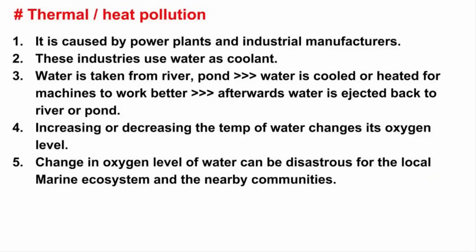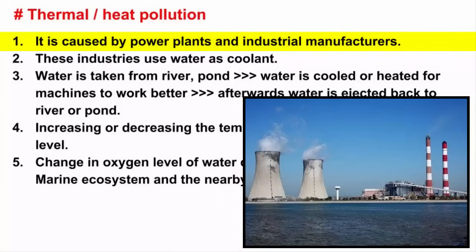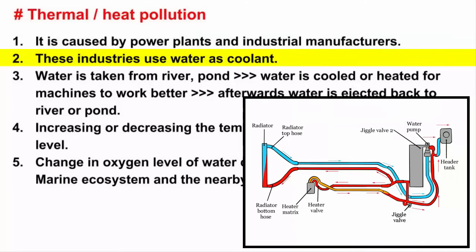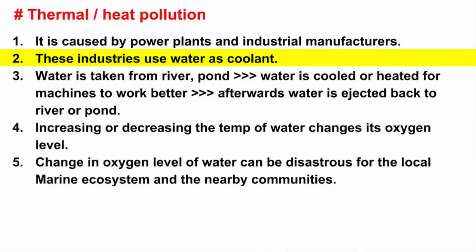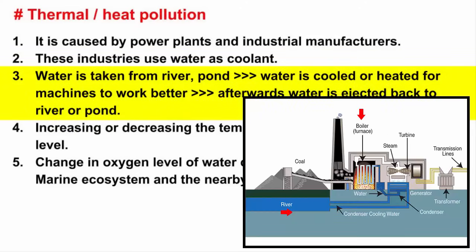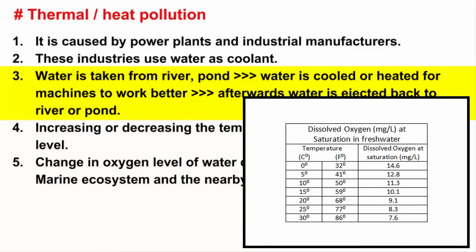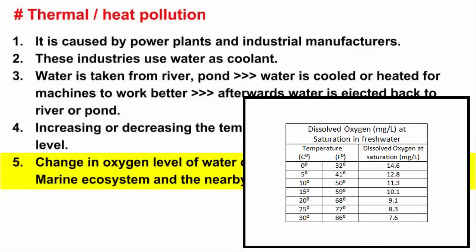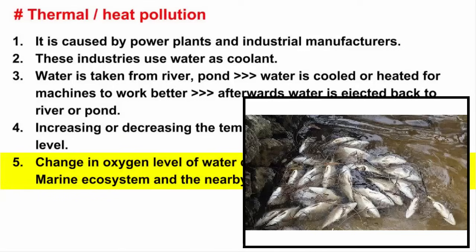The sixth one is thermal or heat pollution. Thermal pollution is commonly caused by power plants and industrial manufacturers, because water is used as a coolant by these facilities. Water is taken from a natural source like a pond or river, then cooled down or heated up for machinery, and once the work is done, ejected back to its source. Whenever the temperature of water is changed, the oxygen level in the water changes. When this altered water is released back into the river or pond, it can be disastrous for the local marine ecosystem and the nearby communities.